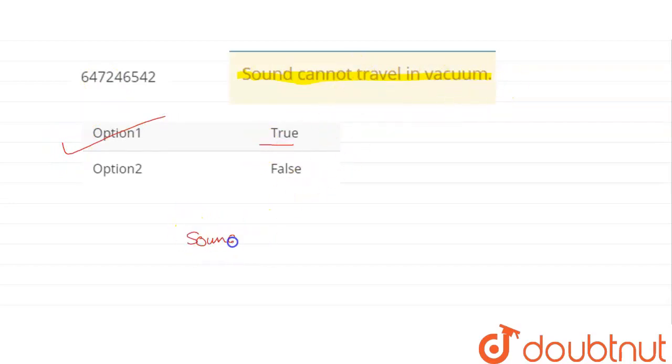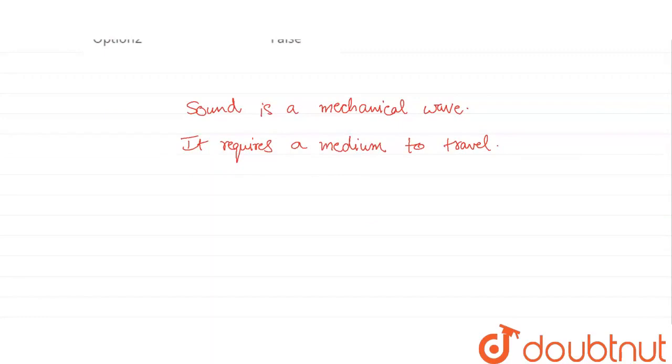Sound indeed cannot travel in vacuum. Why? Because sound is a mechanical wave. It requires a medium to travel. Why? Because sound is not an electromagnetic wave. It is a compression and rarefaction.